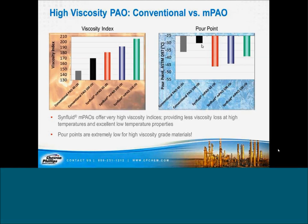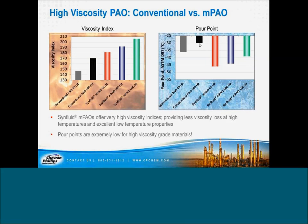Turning to the pour point, we have the same comparison between the 40 centistoke and the 100 centistoke conventional materials. The mPAOs have a substantially reduced pour point. The mPAO 65 is a little less than minus 45°C, the mPAO 100 is approaching minus 45°C, and the mPAO 150 is almost minus 40°C, about minus 38 to minus 39°C. Comparing viscosity versus viscosity, going from PAO 100 at minus 30°C down to about minus 44°C for the mPAO 100 is a nice improvement. In general, you do see an improvement in the low-temperature viscometrics.